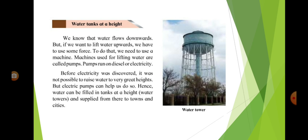Before electricity was discovered, it was not possible to raise water to very great heights. But electric pumps can help us to do so. Hence, water can be filled in tanks at a height, water towers, and supplied from there to towns and cities.